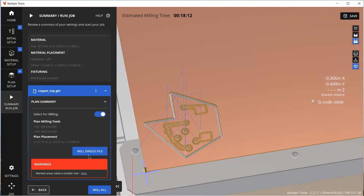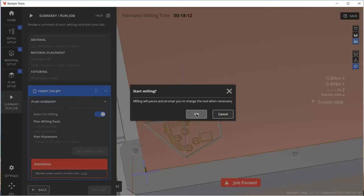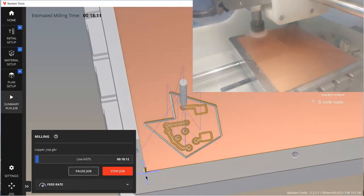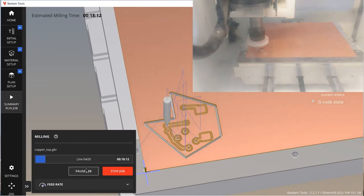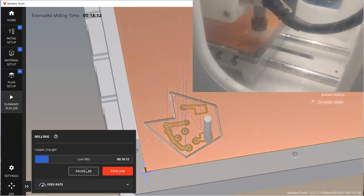Once you've found your z0, you're pretty much good to go. Hit machine all, and watch the mill do its thing. If something is going to go wrong, like the stock lifting up, or moving around, or the bit diving into the spoilboard, it's most likely going to happen in the first few seconds of machining. So I'll also keep my hand near the e-stop for that as well.